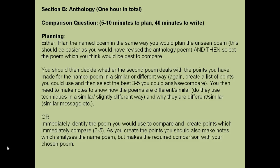Now, planning. In total you have about one hour for this section, so allow five to ten minutes to plan, 40 minutes to write, and about five minutes to proofread. Proofreading is really important — if you don't check your work you might have made a massive mistake or missed something out, and that could be the difference between you getting a star and a lower grade. You've got a choice for your planning. You can plan the named poem the same way you would plan the unseen poem, and this should be easy because you've already read through these poems during school and your revision.